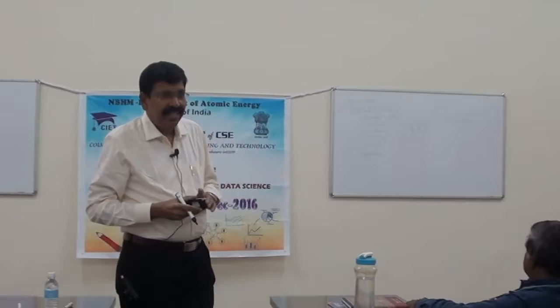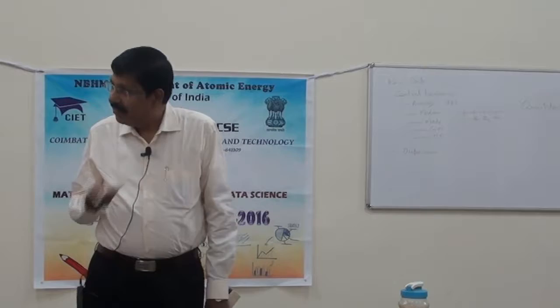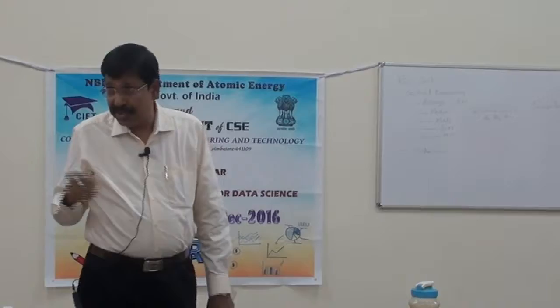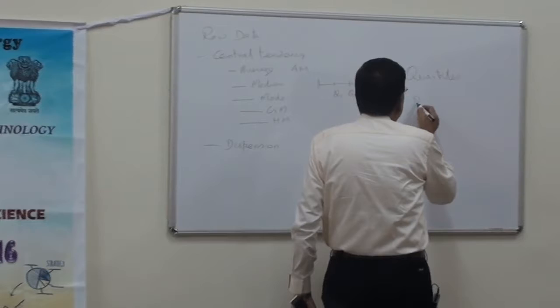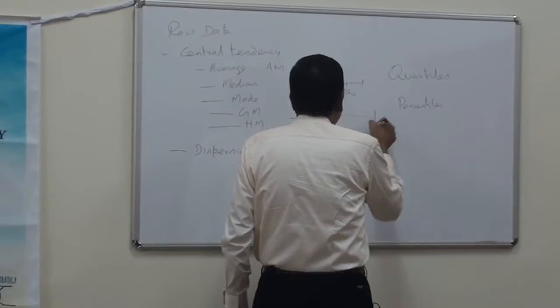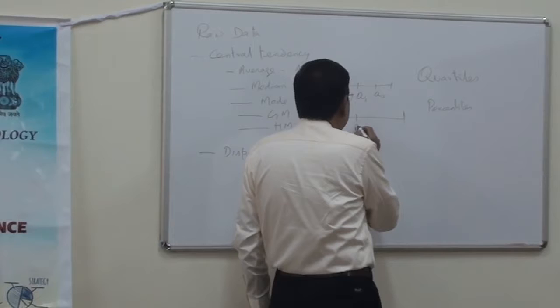Then we have octiles, which divides the whole series into eight equal parts. There are also deciles — ten equal parts. Please pay attention to percentiles, which is very important. Percentiles divide the whole series into 100 equal parts. The central value will be P50, which is equal to Q2, which is equal to median.